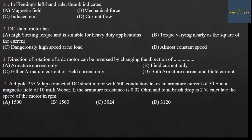First question: Fleming's left hand rule — thumb indicates? This rule applies to DC Motors. For DC Generators, Fleming's right hand rule is used. In the left hand rule: forefinger indicates magnetic field, middle finger indicates current direction, and thumb indicates mechanical force. Answer: Option B.